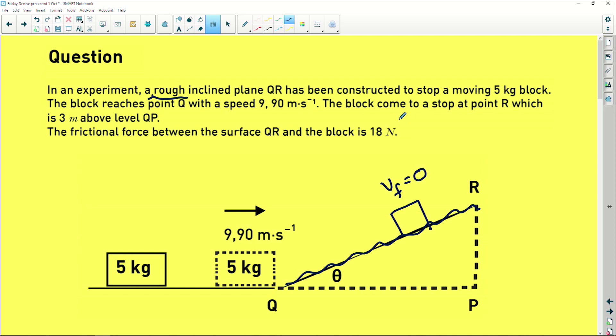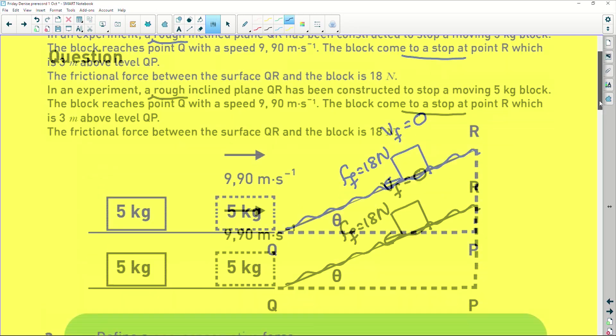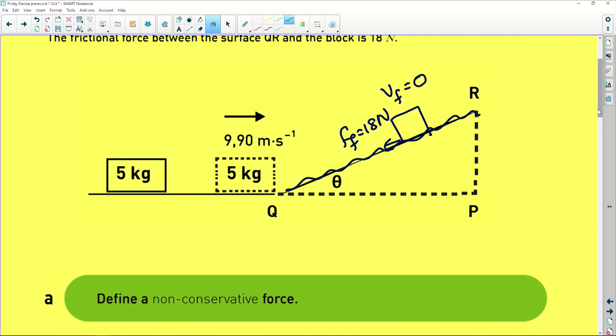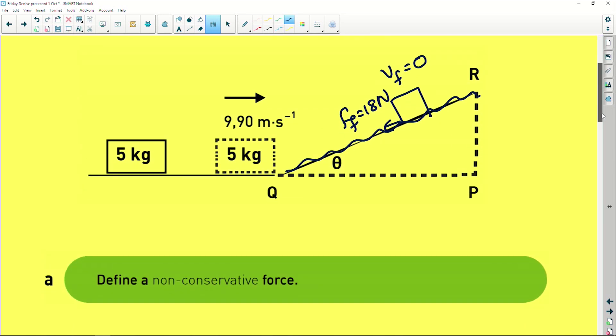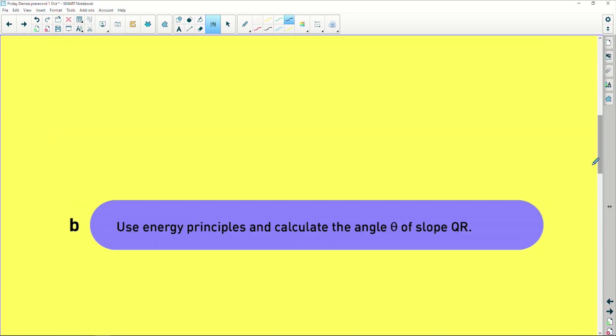The block comes to a stop at point R which is three meters above the ground. The frictional force between the surface QR and the block is 18 newtons. So we know there's a force of friction acting of 18 newtons. Now if we go into the question, remember the first question was about your non-conservative force, so please go learn your definitions.